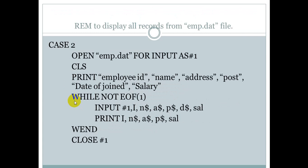For Case 2, we need to display all records from the emp.dat file. We open the file in input mode as file number one. A PRINT statement will display the field names of that file. While not EOF(1) — file number one — INPUT# reads the content of the data file, and the PRINT statement displays the content. Then we close the file.